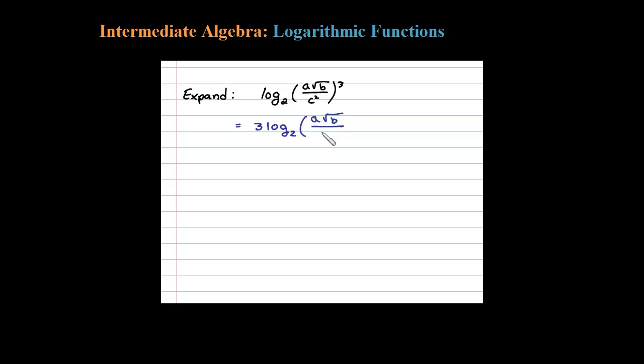Now let's look at the division right here. We know division inside the logarithm is equivalent to subtraction of the logs. But notice here it's 3 times this logarithm, so I'm going to make sure to expand that within a parentheses. That will leave me with log base 2 of a times the square root of b minus log base 2 of c squared.